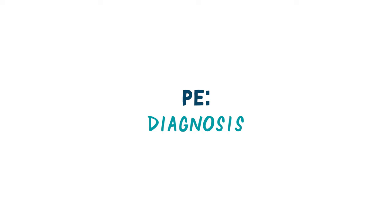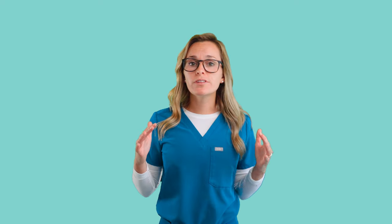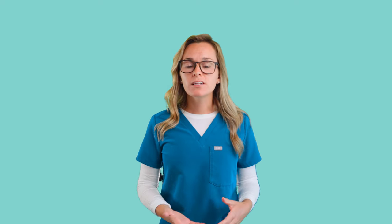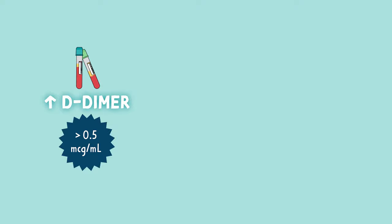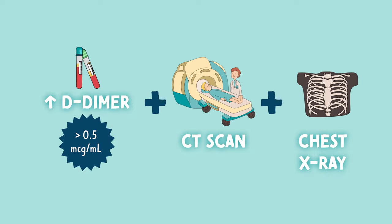Diagnosing a PE is very similar to diagnosing a DVT — remember, both sit under the VTE umbrella. A D-dimer lab test will likely be ordered to check for that protein fragment in the blood, telling us a clot is somewhere to be found. An elevated level greater than 0.5 should raise a red flag. Since a D-dimer only tells us there is a clot somewhere in the body, we need a CT scan and a chest X-ray to visualize the lungs and locate exactly where that suspected clot is hiding.